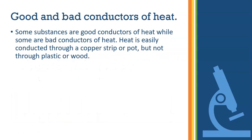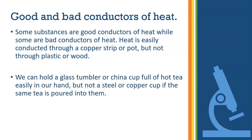Some substances are good conductors of heat while some are bad conductors of heat. Heat is easily conducted through a copper strip or pot but not through plastic or wood. We can hold a glass tumbler or china cup full of hot tea easily in our hand, but not a steel or copper cup if the same tea is poured into them.